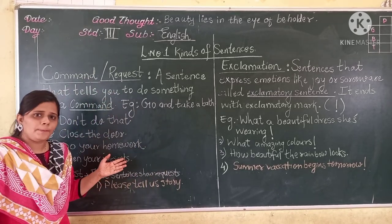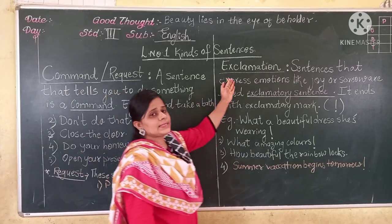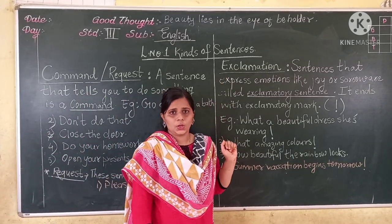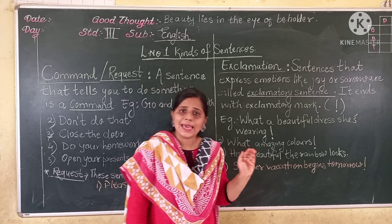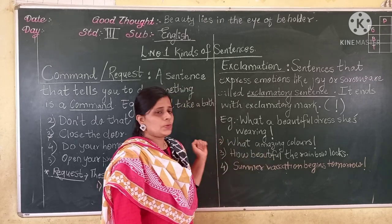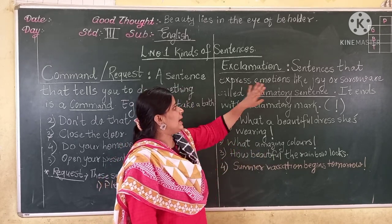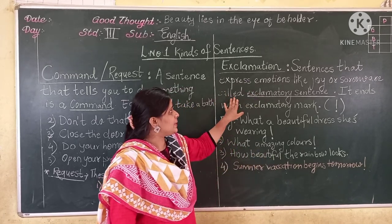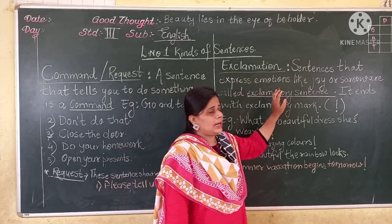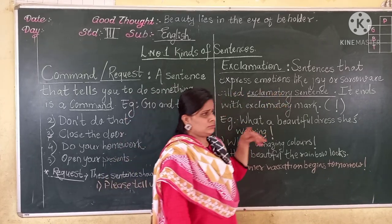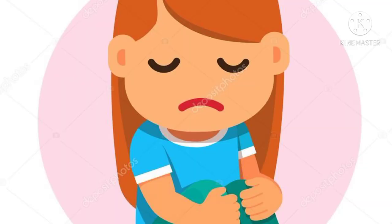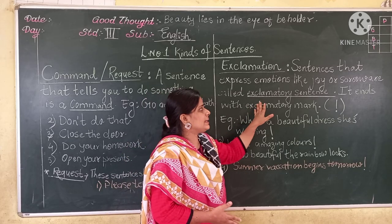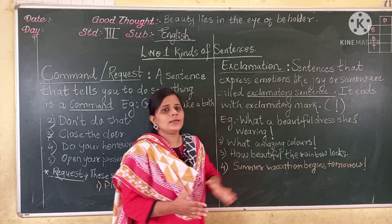Now we will move to the next topic, that is exclamation. So now we will understand what is exclamation. A sentence that expresses emotions like joy or sorrow — that sentence is called an exclamation, or exclamatory sentence.